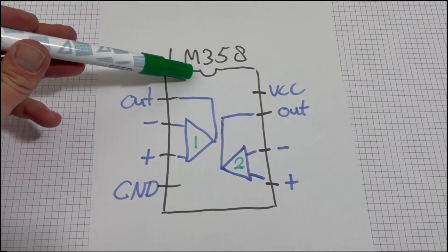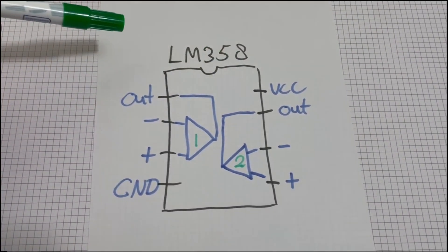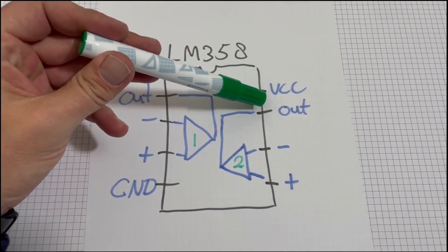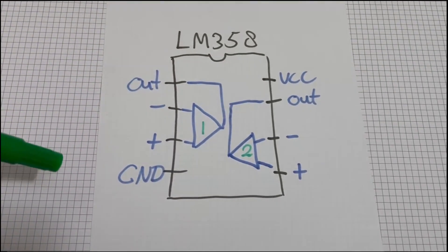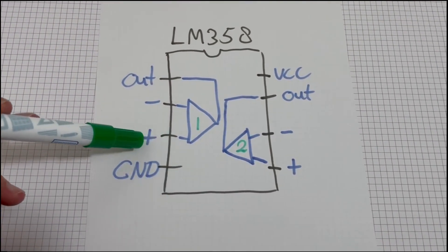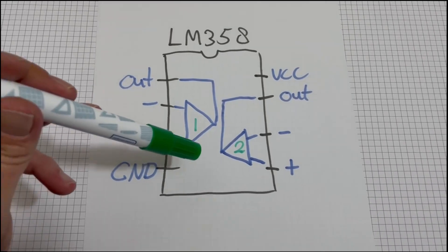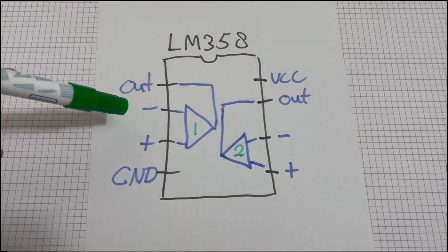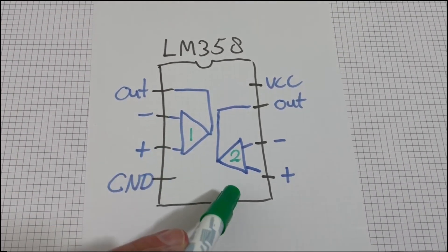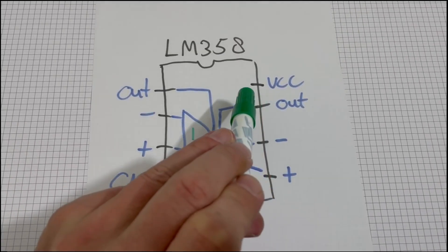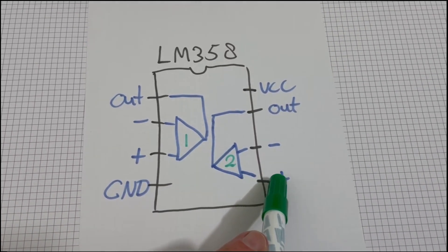Pinout. The notch or dot shows us what side is north on the IC. Both op-amps are powered from a single power pin on the top right, and a ground pin on the bottom left. The first op-amp has its connections on the left side, and the second one on the right side. I always keep a drawing like this on the table when building a circuit.